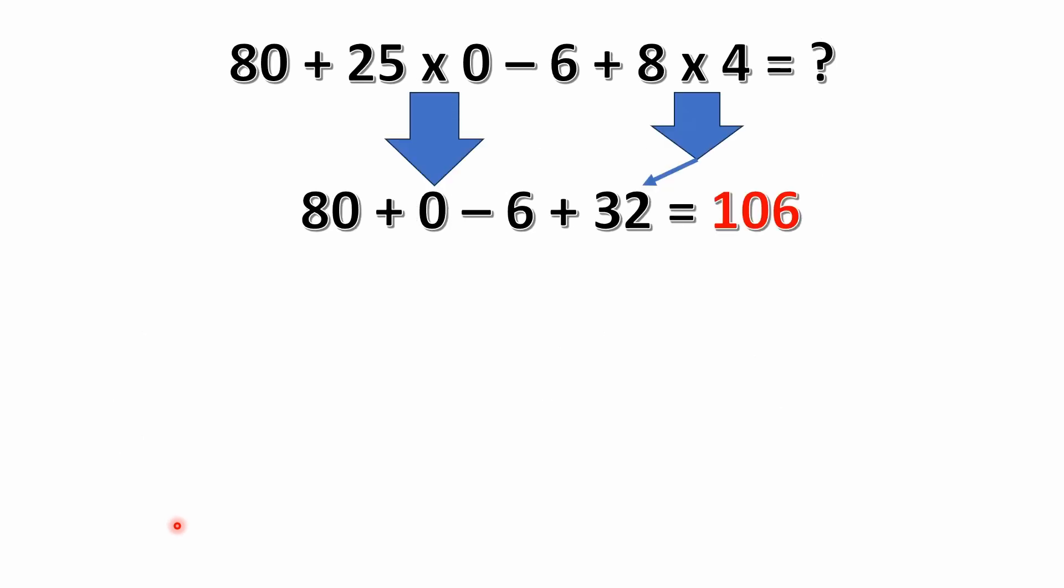So in this problem, the first thing that we'll run into going left to right is multiplication. We don't have any parentheses, we don't have any exponents. So we start with 25 times 0.